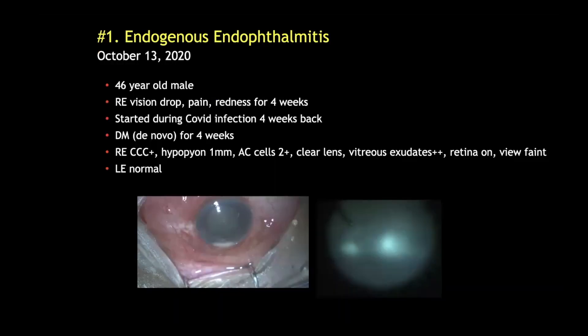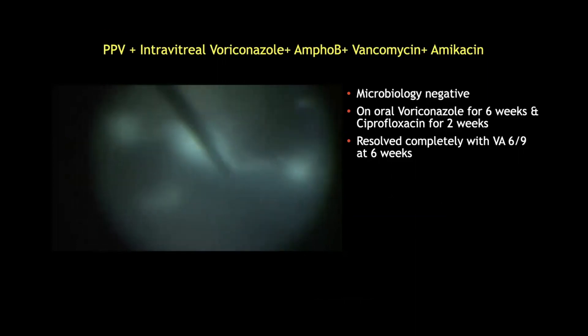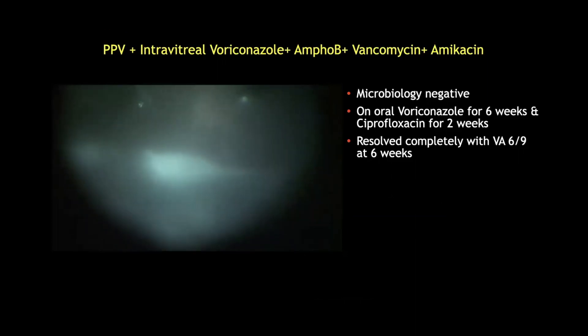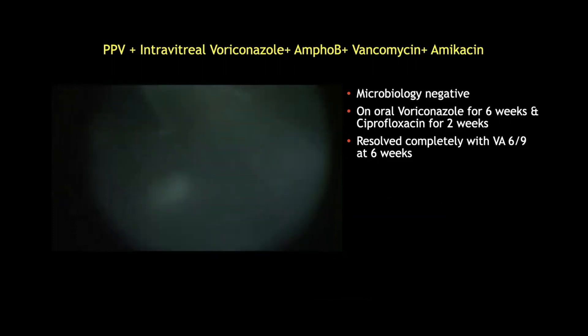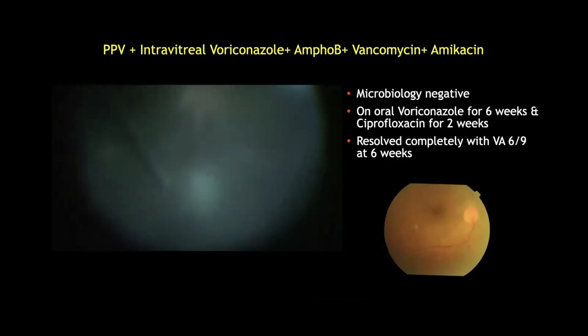Our first patient was a 46-year-old male who presented in October last year with symptoms of endophthalmitis of four weeks duration that started during his COVID infection, at which time he also developed diabetes. He was treated with pars plana vitrectomy and intravitreal antimicrobial agents. Vitreous microbiology was negative.